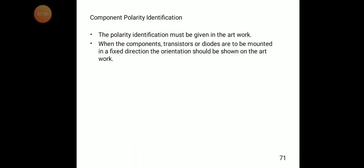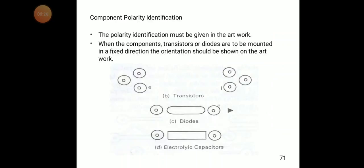Another important topic is component polarity identification. Once we design the PCB with sufficient grids, solder pads, and conductor lines, we must be able to identify the polarity of each component when mounting it. The polarity identification must be given in the artwork. When components such as transistors or diodes are to be mounted in a fixed direction, the orientation should be shown on the artwork.